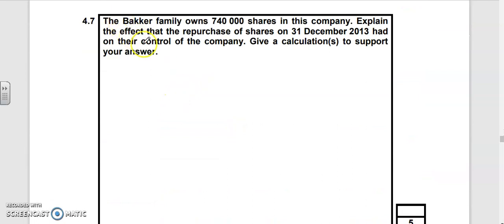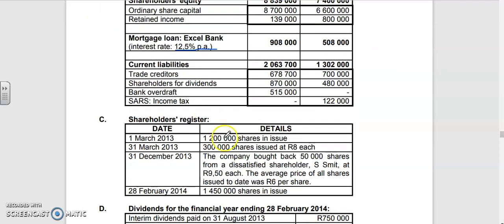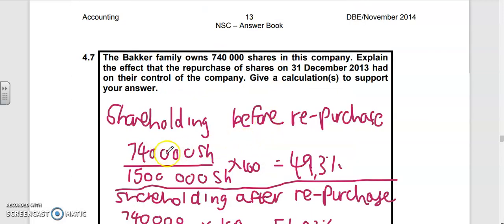The Buck family owns shares in the company. We need to calculate the percentage of shareholding before the repurchase. The number of shares before repurchase was 1.5 million - that's 1.2 million plus 300,000. They held 740,000 shares. 740,000 over 1.5 million times 100 gives 49.3 percent shareholding capacity.